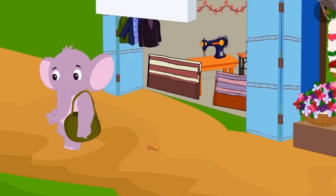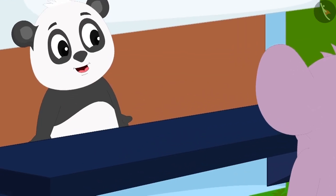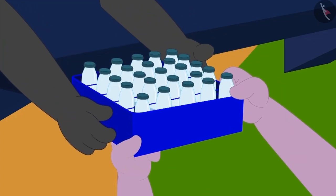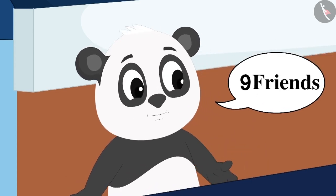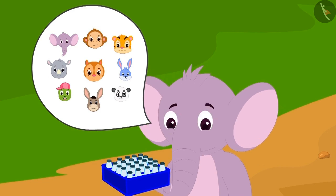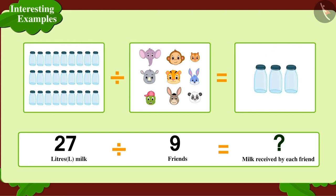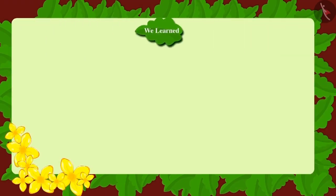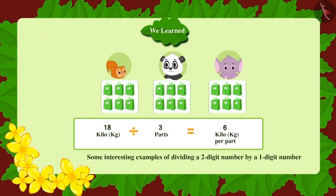Appu went to Golu's dairy to give him the fabric. Golu was delighted and gave Appu 27 liters of milk, saying that all nine friends would equally share the milk. Children, can you tell how many liters of milk each of Appu's friends will get? Well done, children — each of Appu's friends will enjoy 3 liters of milk.